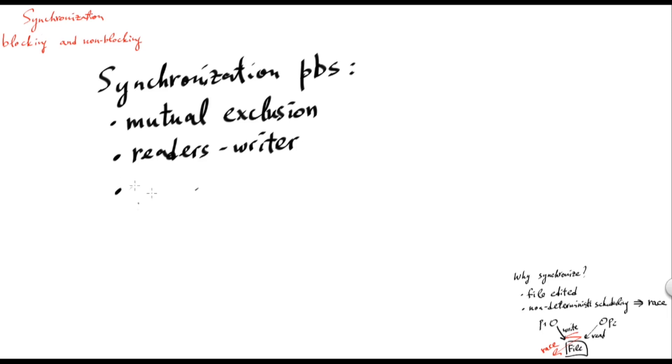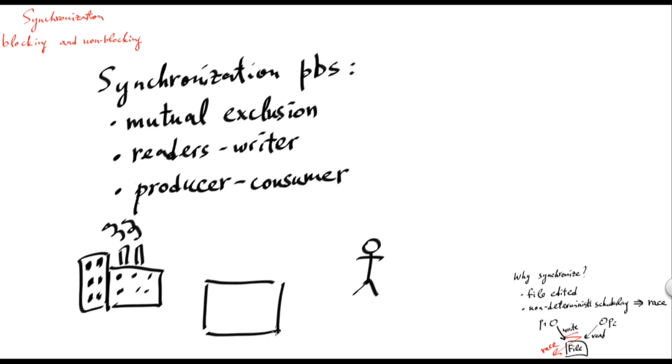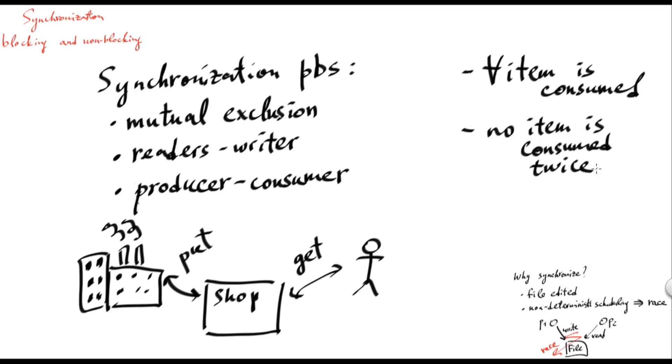And finally, an interesting synchronization problem is the problem of producers and consumers. In this problem we have, in the simplest case, two entities, the producer and the consumer, and we have a buffer of a bounded size. In this particular case it's some maybe shop, which stores items produced by the producer, and the consumer comes to this buffer to consume the items. So the producer puts the items in the buffer using an operation put, and the consumer gets the items from the buffer using the operation get. And the properties of the problem are the following. First of all, we require that every item is eventually consumed. No item is consumed twice, which means that if the consumer gets a given item from the buffer, it will never get it again. And of course, since the buffer is of bounded size, no more than max items could be in the buffer.